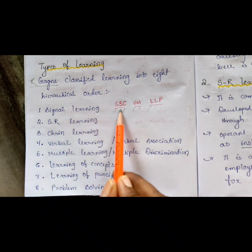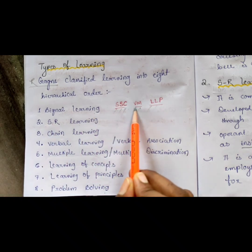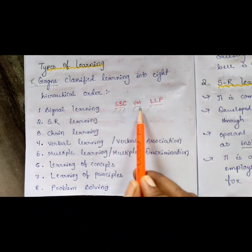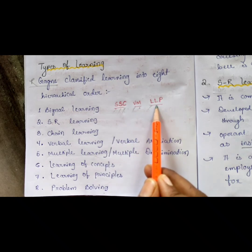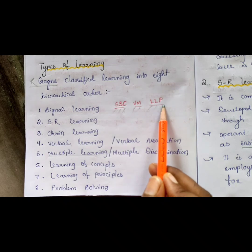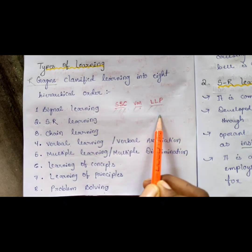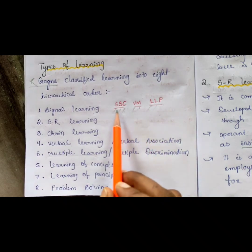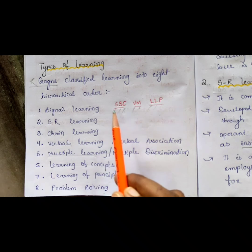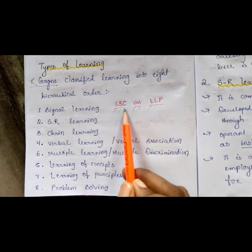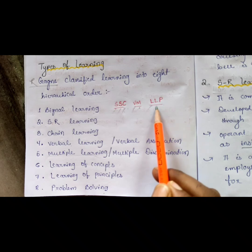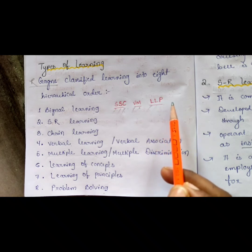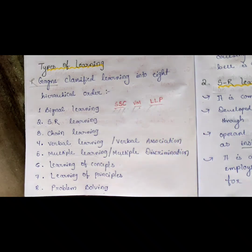Continuing the mnemonic: L for learning of concept, L for learning of principle, P for problem solving. You can remember it like 'SSC' — a well-known learning platform. You can create your own memory trick. These are Gagné's eight types of learning.